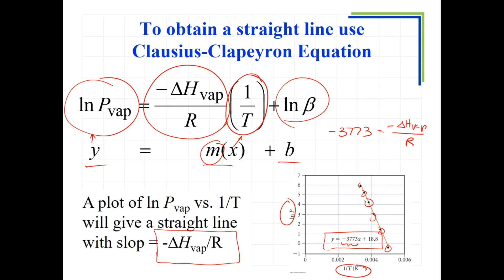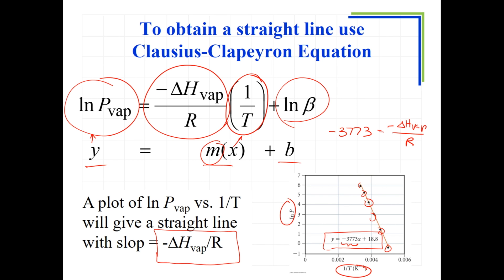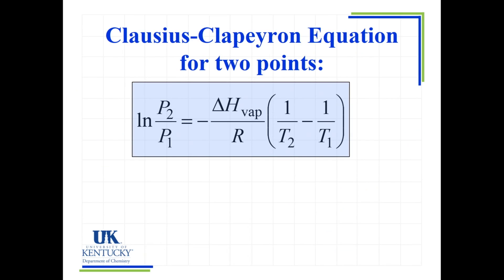But how many points does it take to define a straight line? Truly, only two points are needed. So this is the Clausius-Clapeyron equation with two points. How did this equation get derived? I want to back up to the previous slide and look at it. If we take this equation and do it for one point, let's call it P1 and T1, so we have this temperature and that vapor pressure, and then we do it at another point with T2 and P2, and we take those two mathematical expressions and subtract them from each other, we will end up with this equation. This is the Clausius-Clapeyron equation for two points. You need to know both equations.